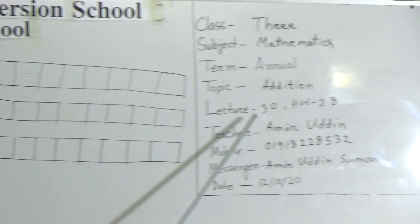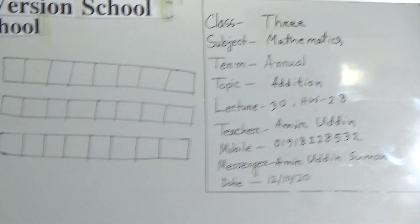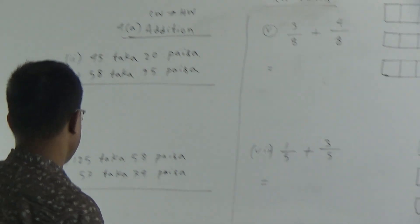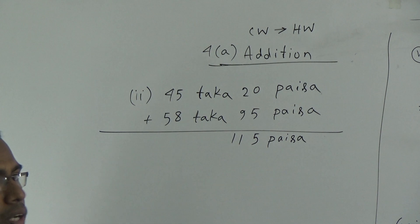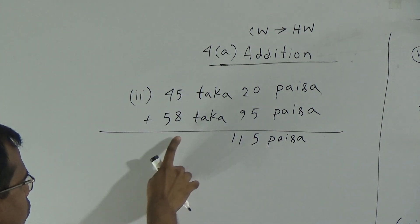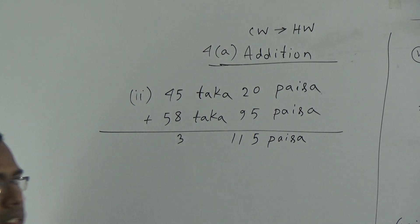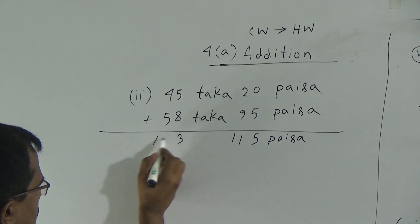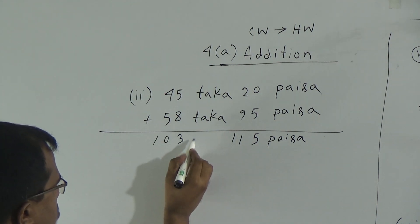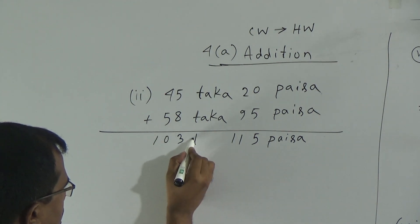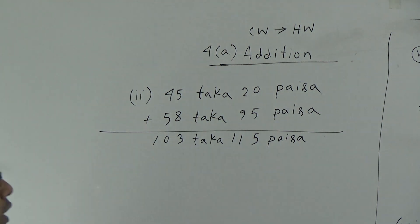Let us start our today's class. Dear students, today we will solve a total of four additions. First addition: 45 taka 20 poisha — we have to add this with 58 taka 95 poisha. At first we will add the portion of poisha. Now 0 plus 5 is equal to 5, and 9 plus 2 is equal to 11.